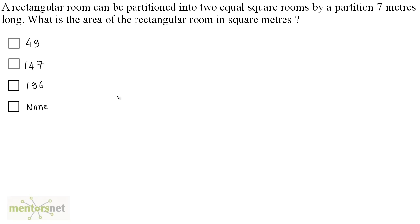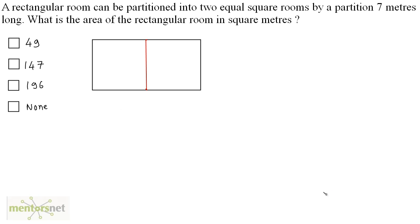A rectangular room can be partitioned into two equal square rooms by a partition 7 meters long. You have a big rectangular room partitioned into two square rooms, and the length of this partition is 7 meters. Since these are two square rooms, the side of both square rooms is 7 meters. The area of the complete rectangle equals the area of the first square plus the area of the second square.